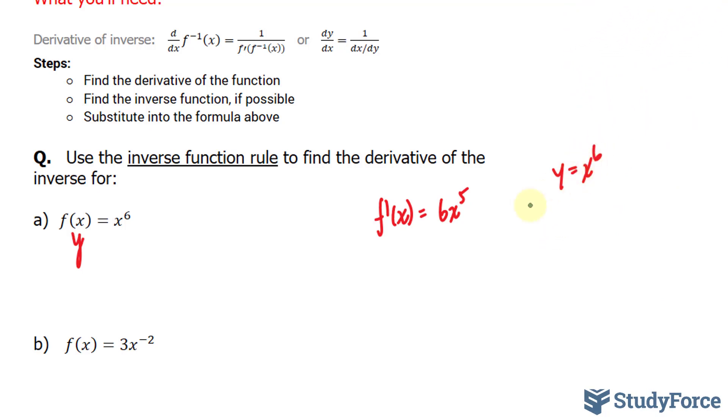We can solve for x by powering both sides to 1 over 6. So we have the 6th root of y is equal to x.